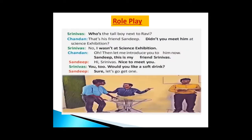Now, let's see how we can use these phrases in daily life through a role play. Srinivas: 'Who's the tall boy next to Ravi?' Chandan: 'That's his friend Sandeep. Don't you know him from the science exhibition?' Srinivas: 'No, I wasn't at the science exhibition.' Chandan: 'Oh, then let me introduce you to him now. Sandeep, this is my friend Srinivas.' Sandeep: 'Hi Srinivas, nice to meet you.' Srinivas: 'You too. Would you like a soft drink?' Sandeep: 'Sure, let's go get one.'